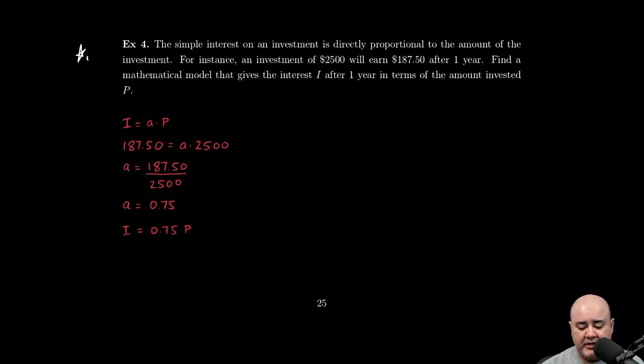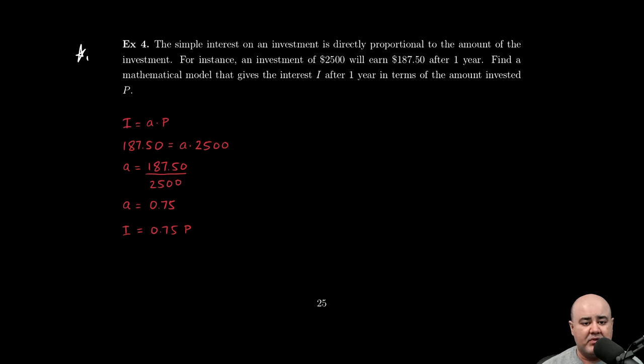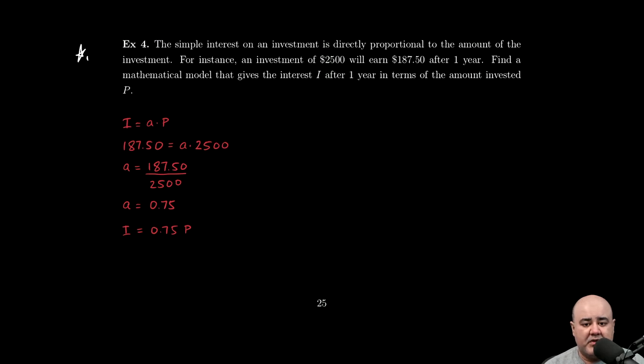The simple interest on an investment is directly proportional to the amount of the investment. So there's two quantities here: the simple interest and the amount of the investment itself. For instance, an investment of $2500 will earn $187.50 after one year.